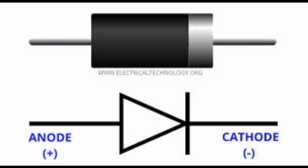It is a unidirectional device. It has two terminals: Anode and cathode. Anode is positive terminal. Cathode is negative terminal.